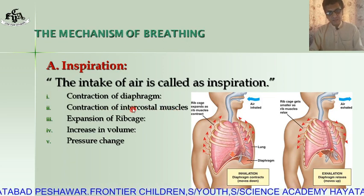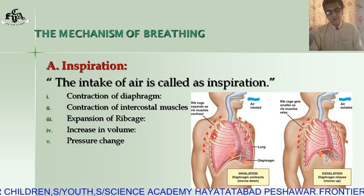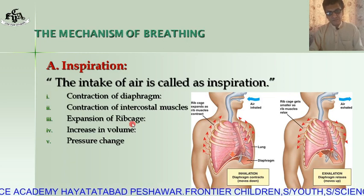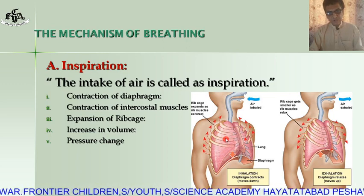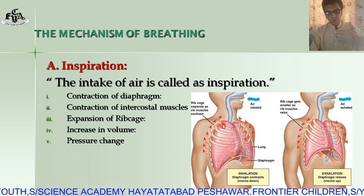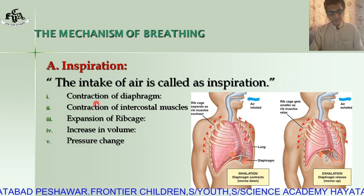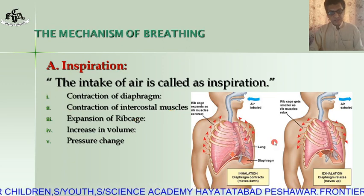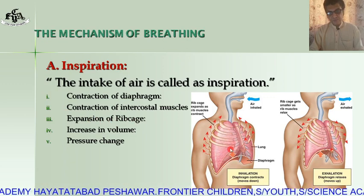The second step is contraction of the intercostal muscles — the muscles between the ribs. When the intercostal muscles contract, the next step follows: expansion of the rib cage. Because of the contraction of the intercostal muscles, the rib cage moves outward and upward.